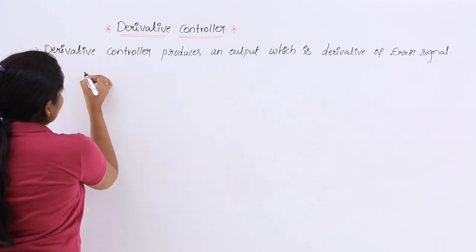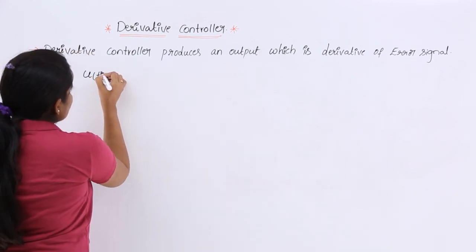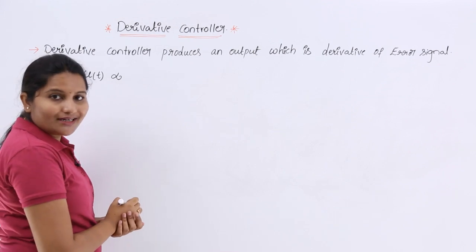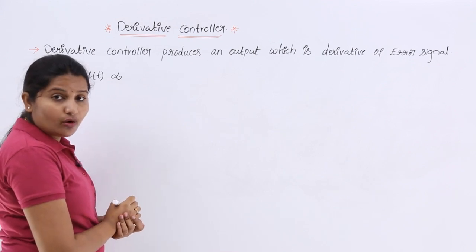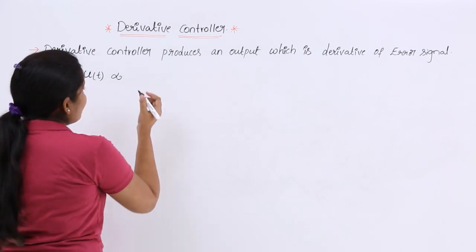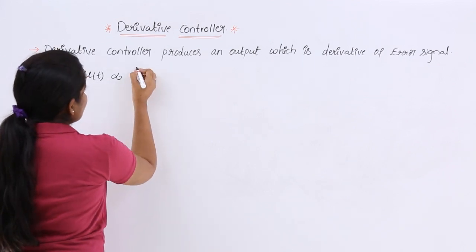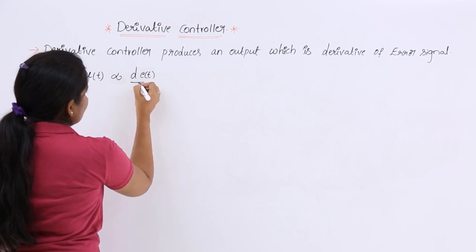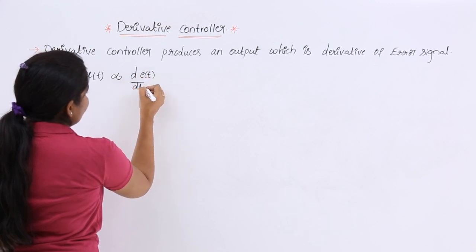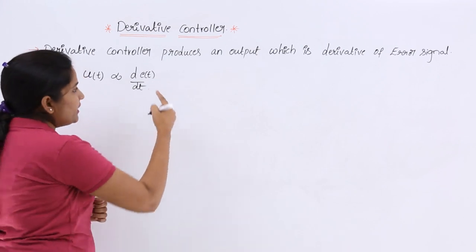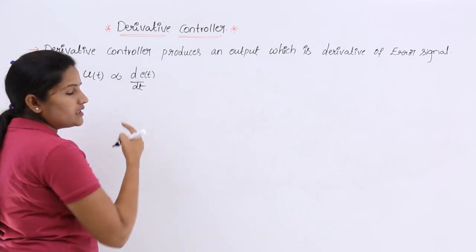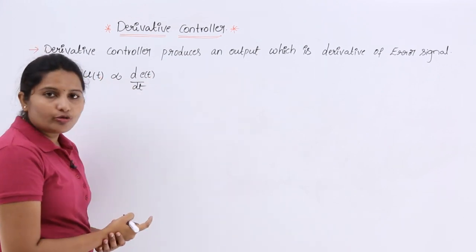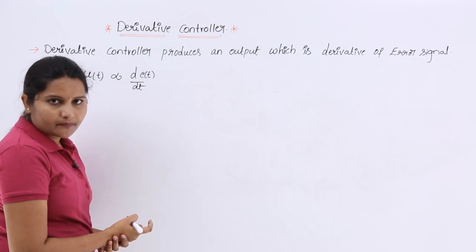Considering the output as u(t), this u(t) is proportional to the derivative of the error signal — that is, d(e(t))/dt — where e(t) is the input error signal and u(t) is the output of the derivative controller.